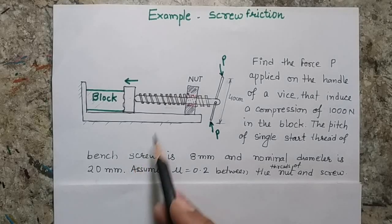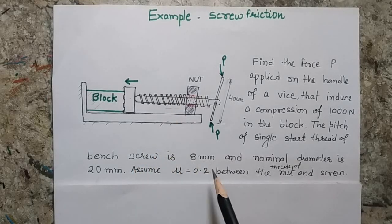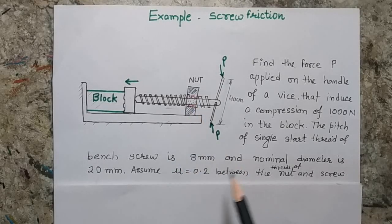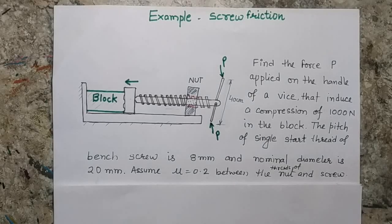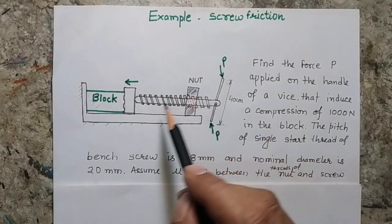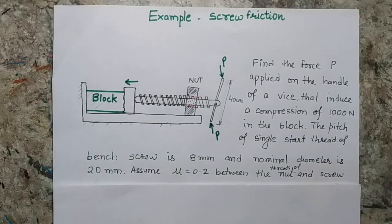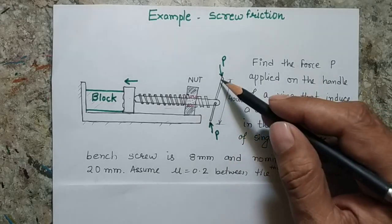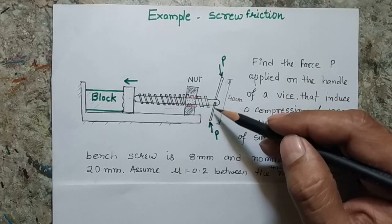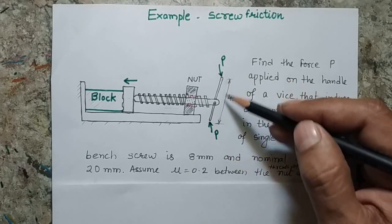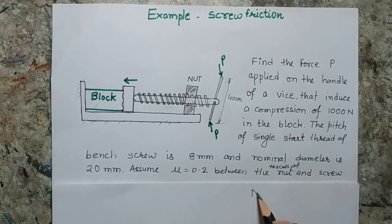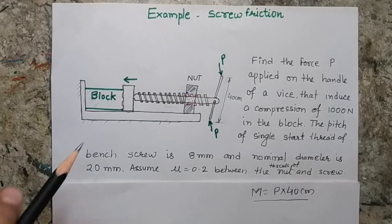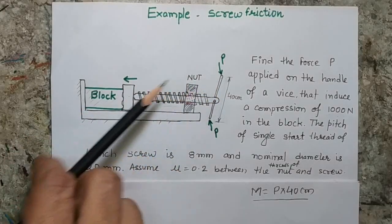The screw has a pitch of 8 mm and it is a single start thread. The nominal diameter of the screw is 20 mm. The coefficient of friction between the nut and the screw is 0.2. We need to find the value of P — the force applied at the end of the lever — such that the given compression is generated in the block. The force P acts at both ends of the lever in opposite directions, and the length of the lever is 40 cm, so there will be a couple or moment M equal to P × 40 cm.